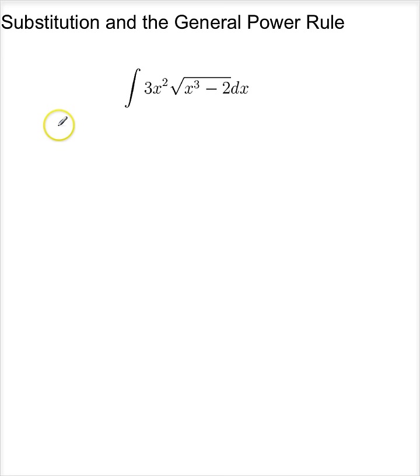Now let's look at this one. Let's let u, you always want u to be whatever's under a power if possible. x cubed minus 2, du is 3x squared dx. So there is du, here is u, this becomes the integral of u to the one-half du.